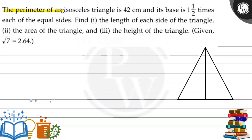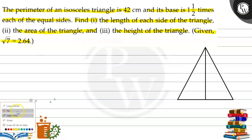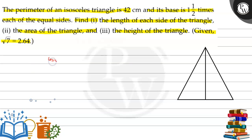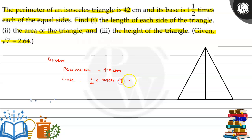Look at the question: given the perimeter of an isosceles triangle is 42 cm, and its base is 1 and 1/2 times each of the equal side. Find first the length of each side of the triangle, second the area of the triangle, and third the height of the triangle, given that root 7 is equal to 2.64.